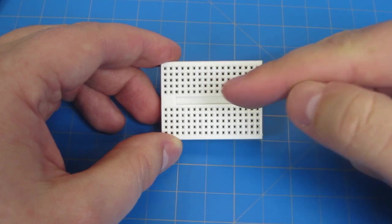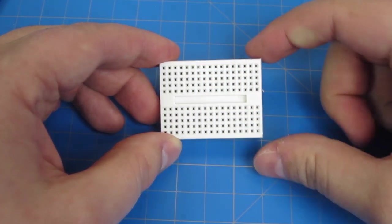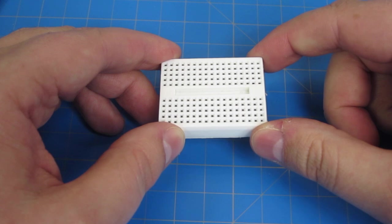Breadboards are great. They're nice for doing prototyping and small projects on. From top to bottom, all the rows are connected, but not from left to right.